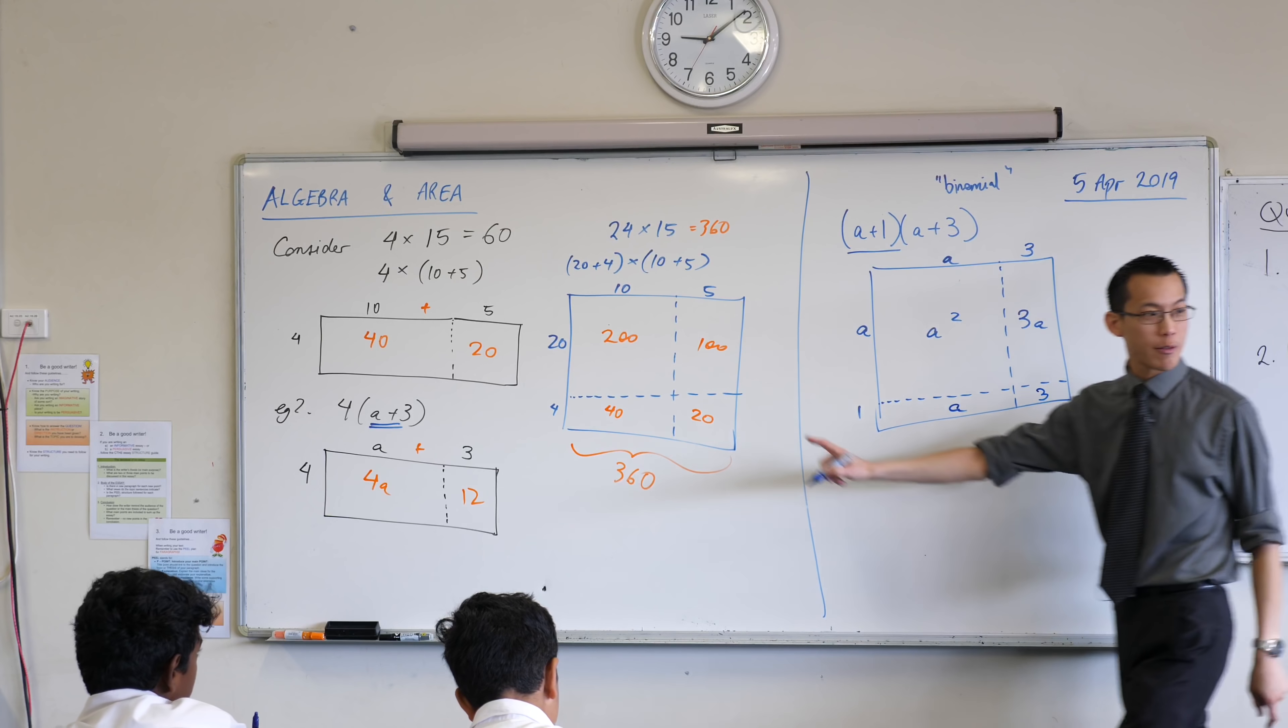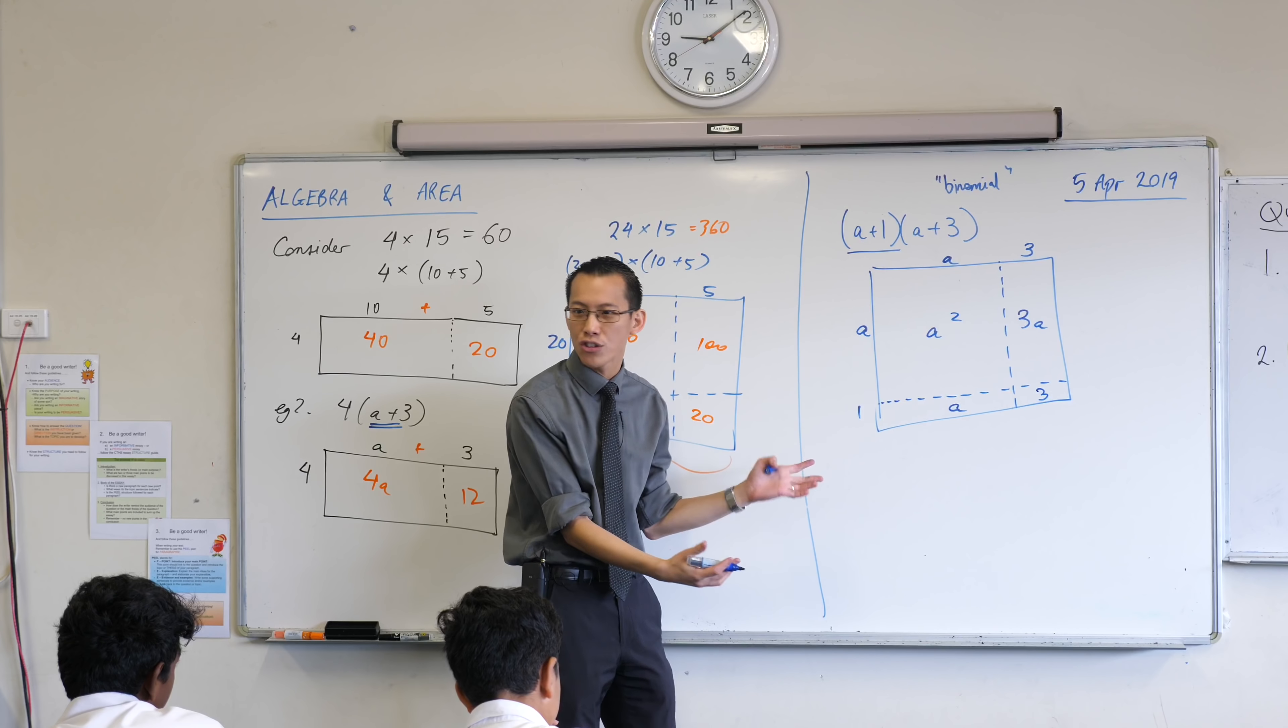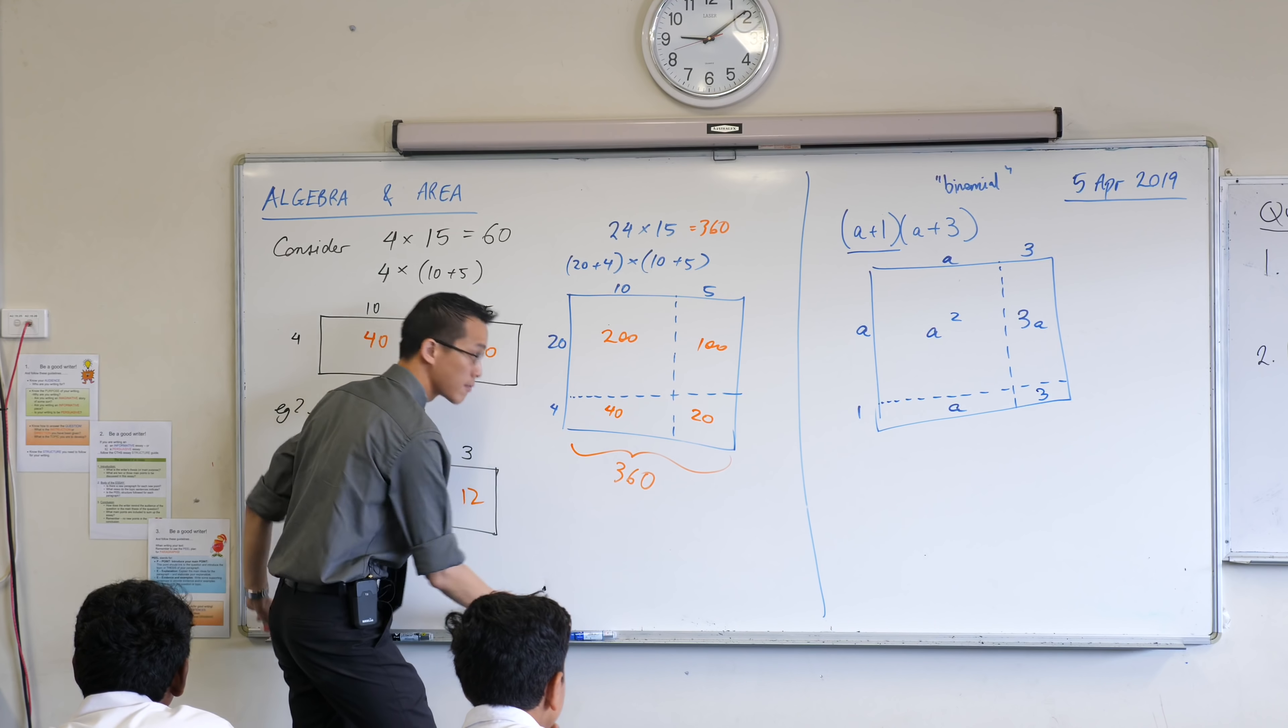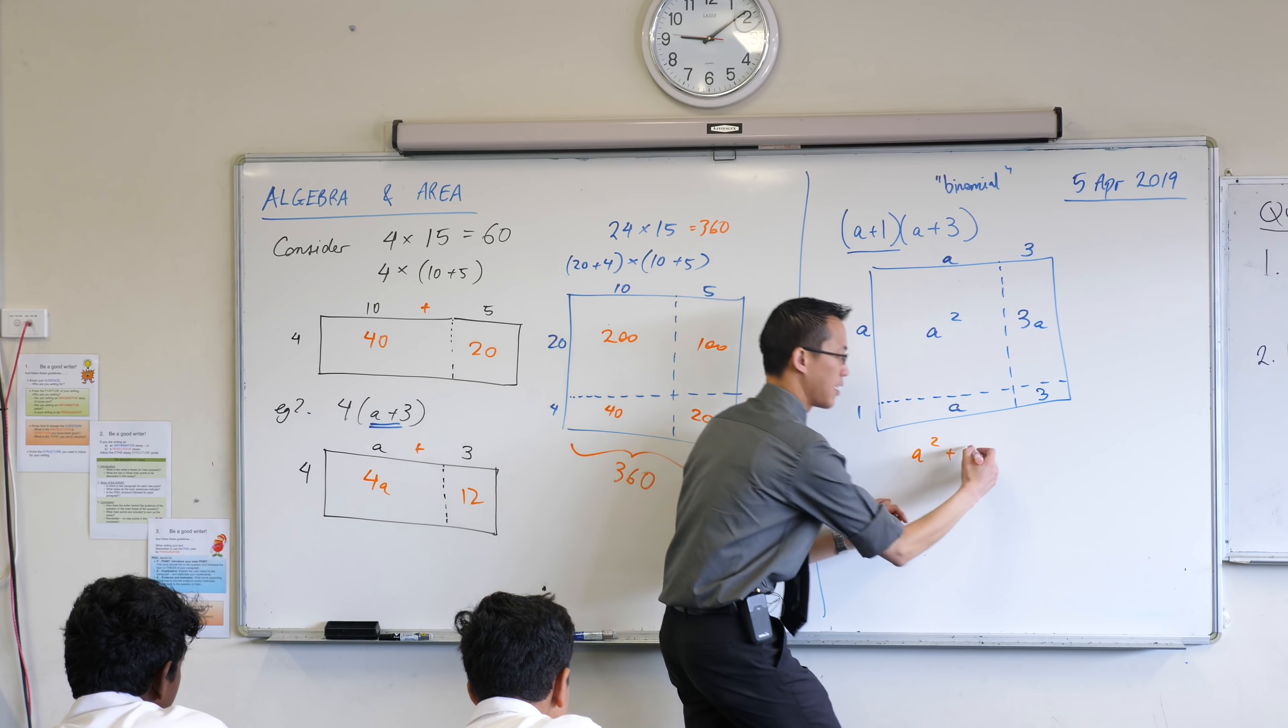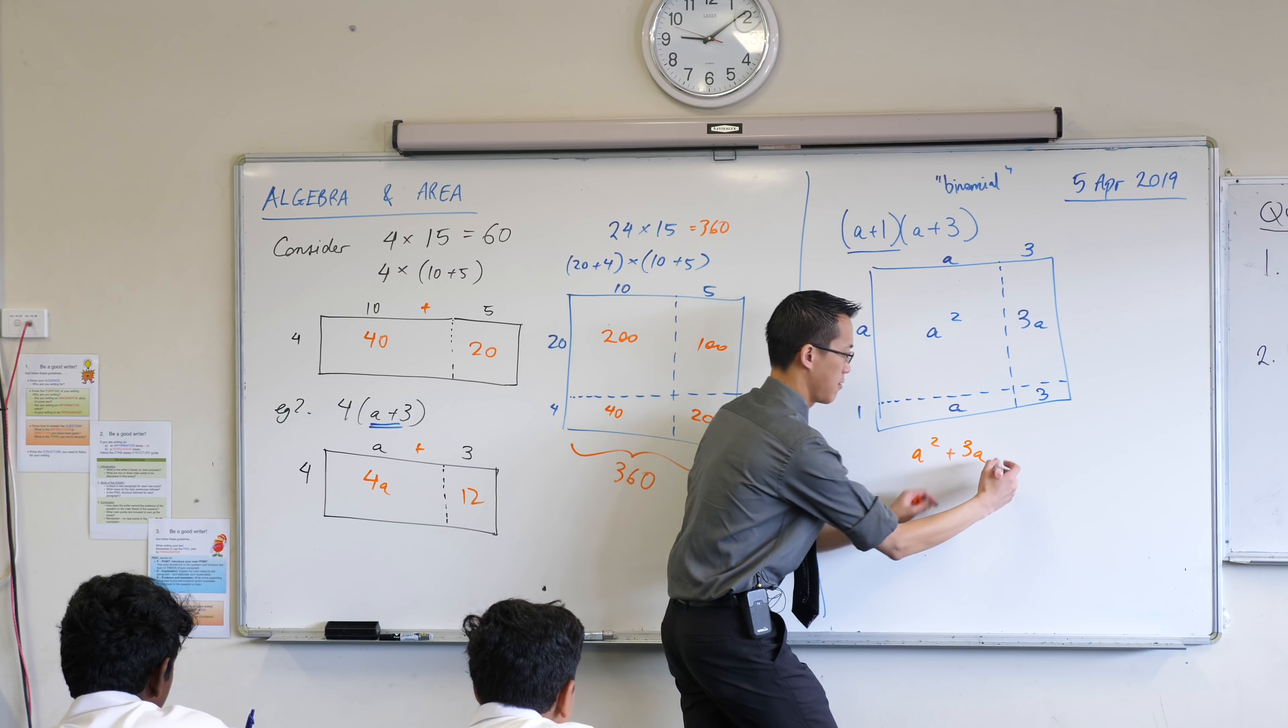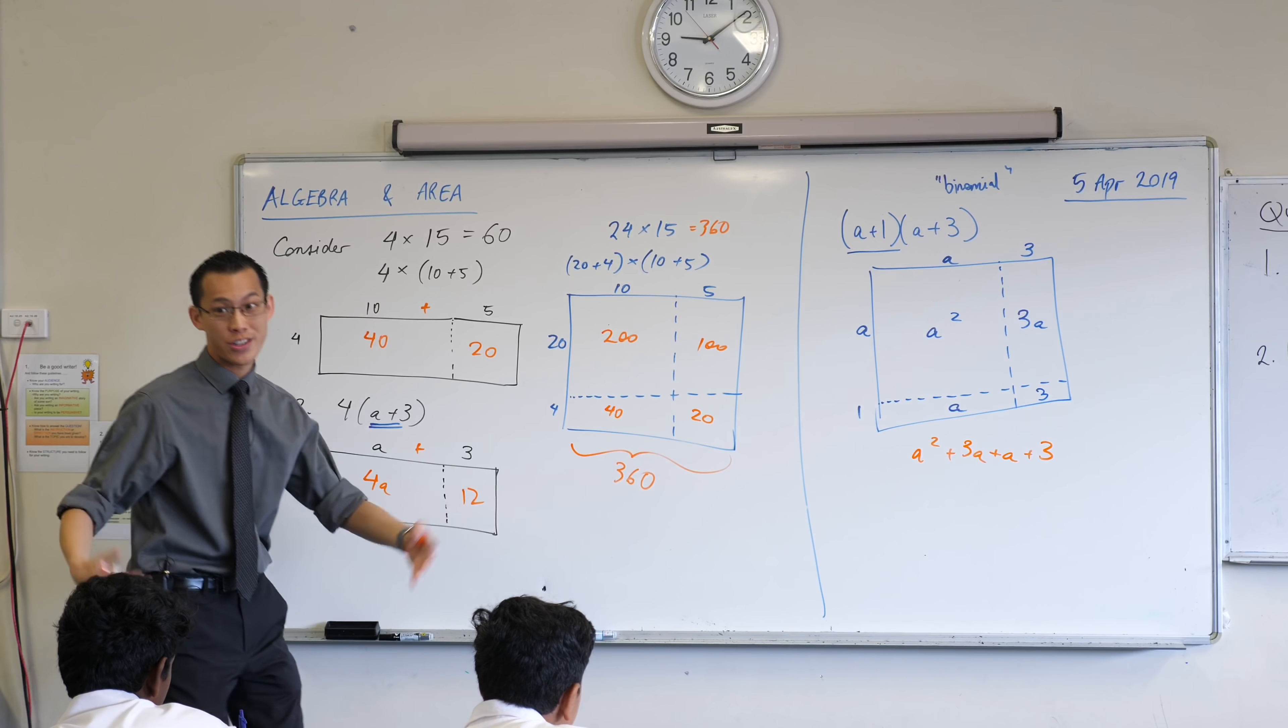Now, we got 360 by adding up all four of these numbers. Here I'm going to do the same thing, but there's just some algebra there, right? So, here we go. A squared, there's that one, plus 3A, there's that one, plus A plus 3. That's the whole shape.